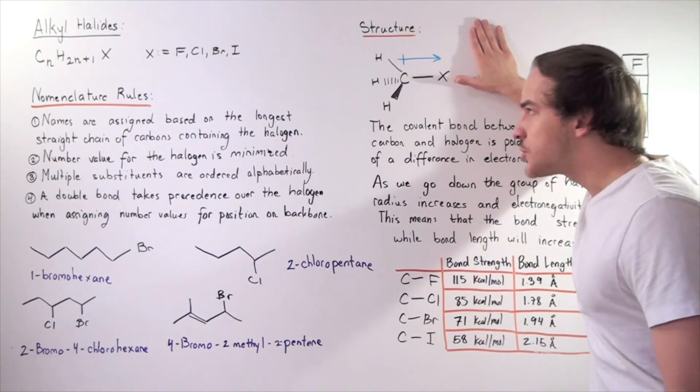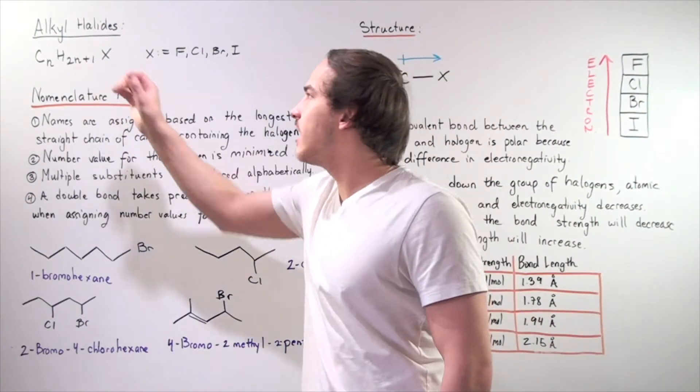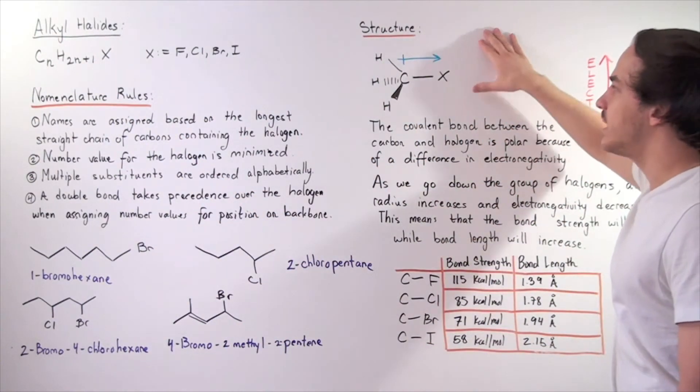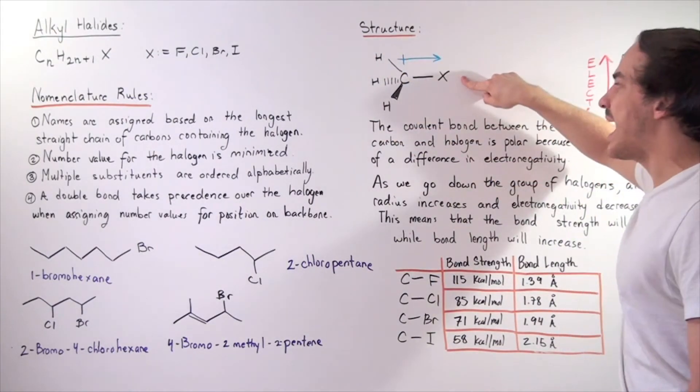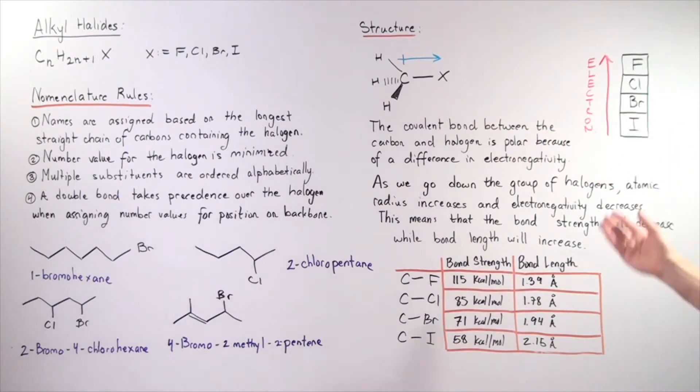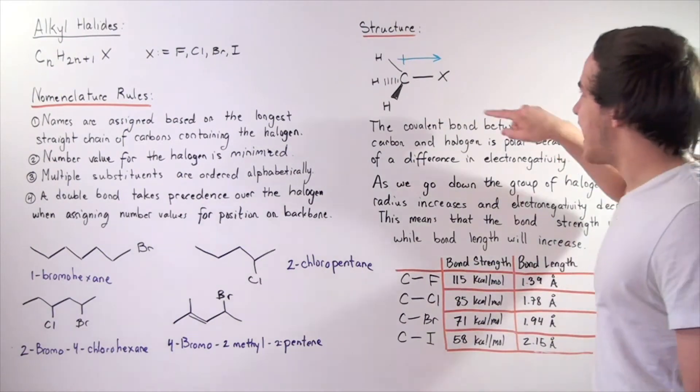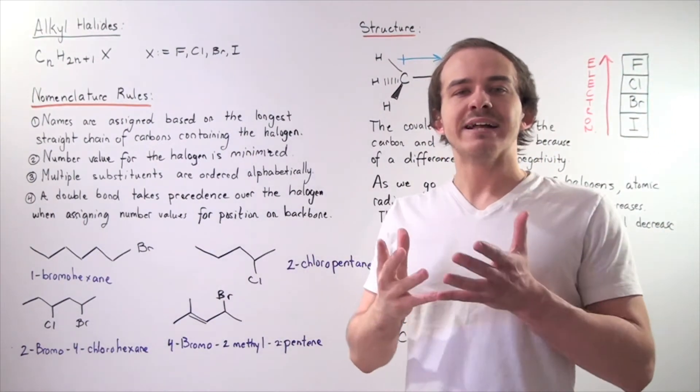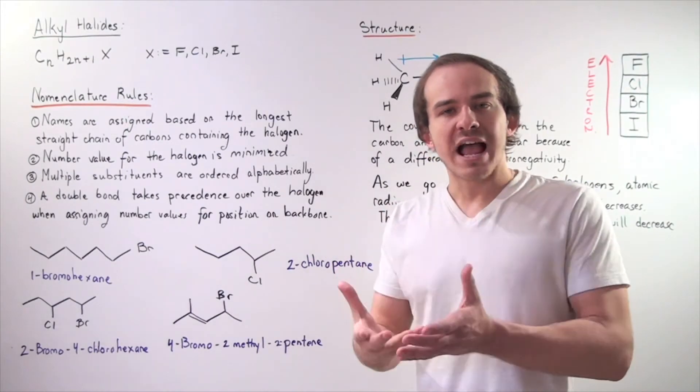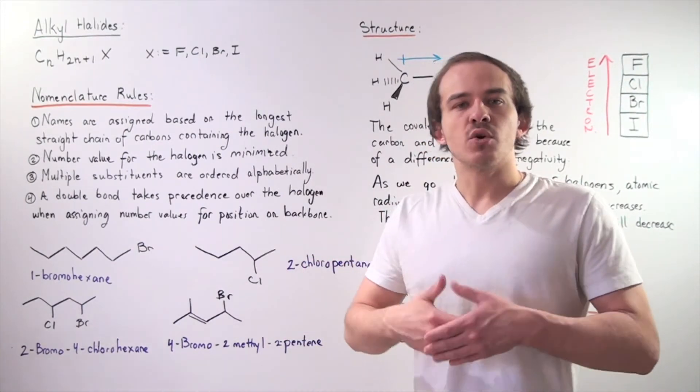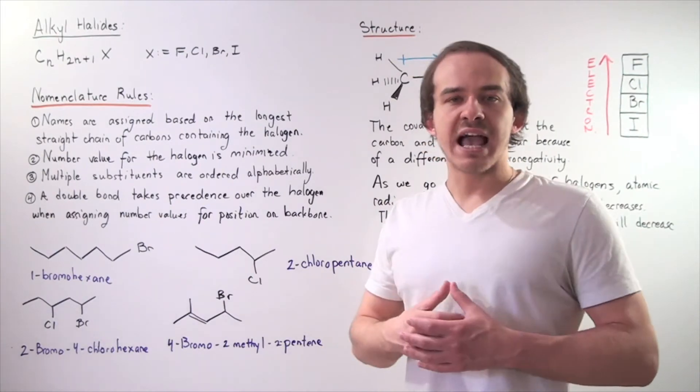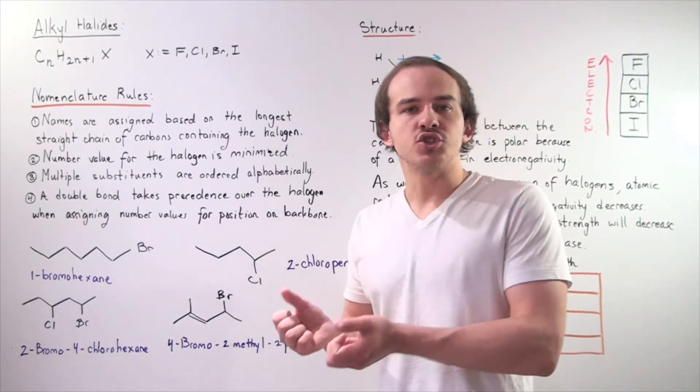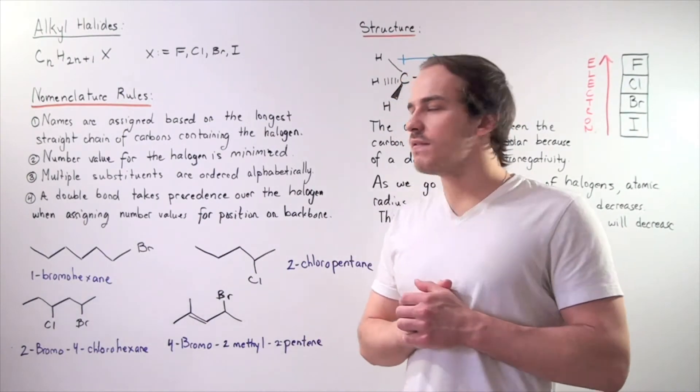Now let's examine the structure of our alkyl halide. Let's take the simplest alkyl halide that has a methyl attached to our halogen. This halogen, once again, can be one of the four different types: fluorine, chlorine, bromine, or iodine. Let's examine this covalent bond. Let's remember what electronegativity is. Electronegativity is the ability of our atoms to attract electrons. The higher the electronegativity of the atom, the more likely the electrons will be attracted to the nucleus of that atom.